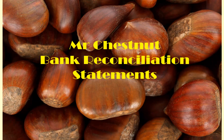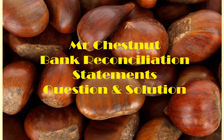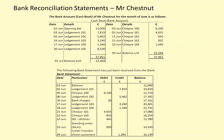Mr. Chestnut Bank Reconciliation Statements, Questions and Solutions. On this page we can see at the top the bank account of Mr. Chestnut for the month of June. This represents Mr. Chestnut's records of his dealings with the bank — his ledger account, his bank account, sometimes called the cash book.